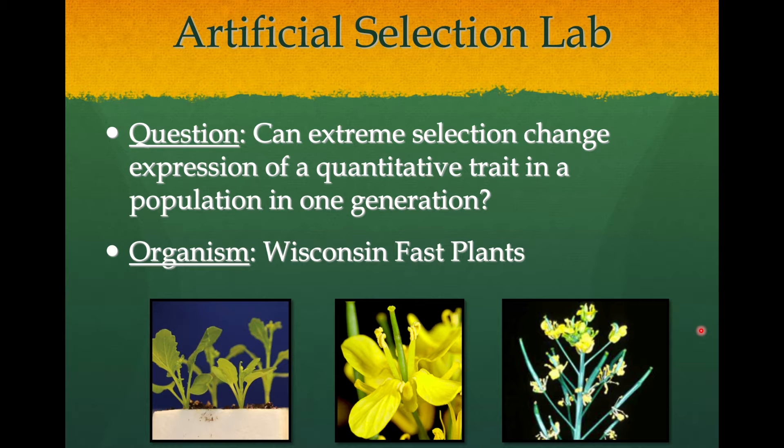The organism we used was the Wisconsin fast plants. We were able to grow these little seeds, have the seedlings grow up. We were looking at the stems between the cotyledons, the seed leaves, and the first true leaves.